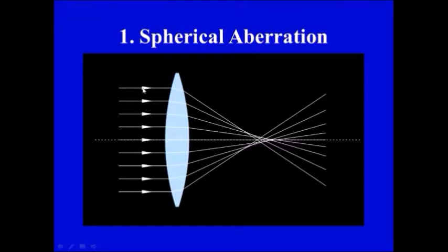In spherical aberration, rays getting into the periphery of the lens will come to a focus close to the lens compared to rays passing through the center.